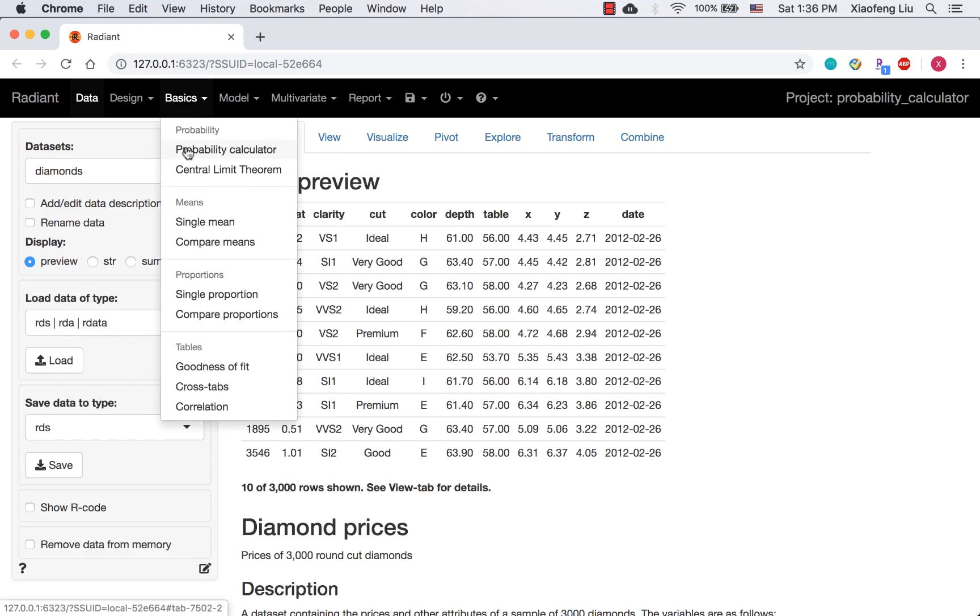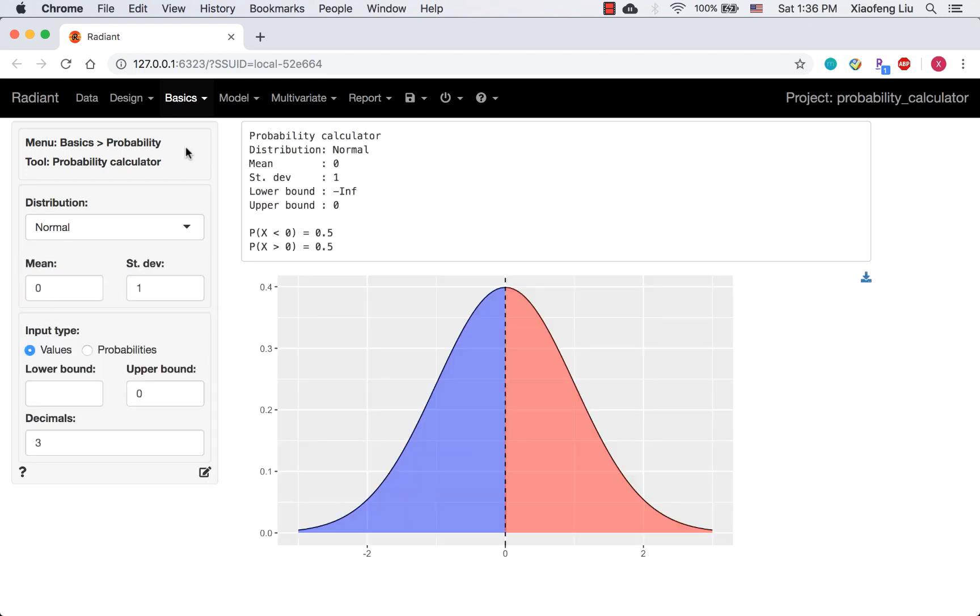From basics, select probability calculator. Since this is a discrete random variable, the distribution type is discrete.